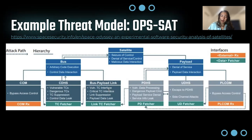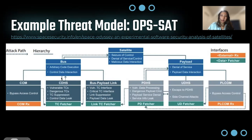Another way attackers can proceed is starting from the link TC fetcher — exploiting a vulnerable TC interface, moving to compromise the command data handling system, then the bus, then the satellite. Similarly, starting with the PLCOM receiver, bypassing access control, moving to the PD fetcher, exploiting a service information link, moving to the UDHS for a side channel attack. Or they can do an attack on the PLCOM, move to the PD fetcher, exploit vulnerable data processing, cause malicious payload data interaction, and then compromise the satellite using malicious data interaction. It's a general outline and hierarchy of possible threat models that really helps people on the cyber side audit through possible vulnerabilities so attacks like this don't actually occur.